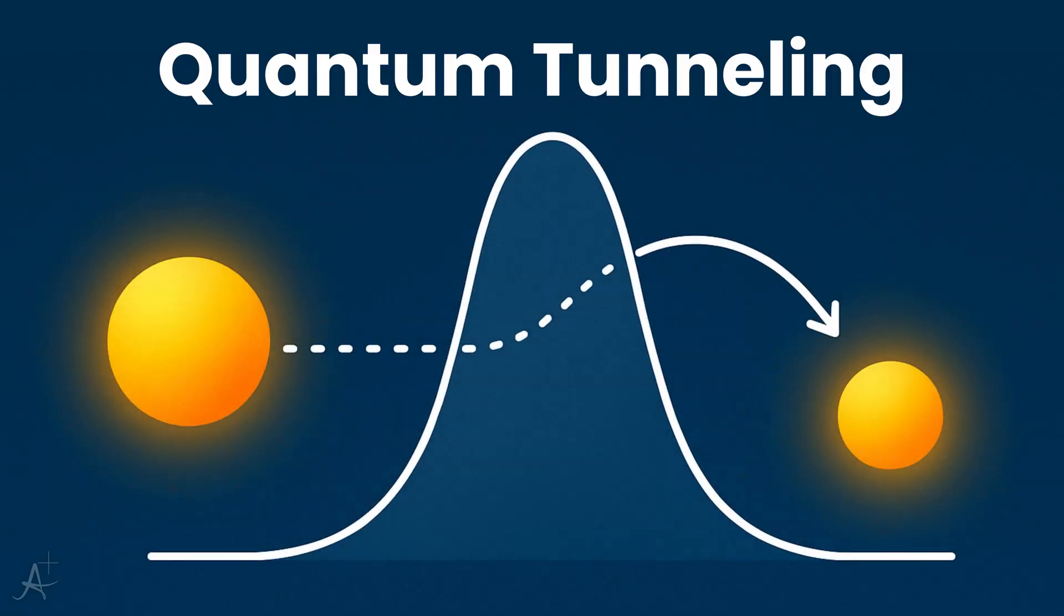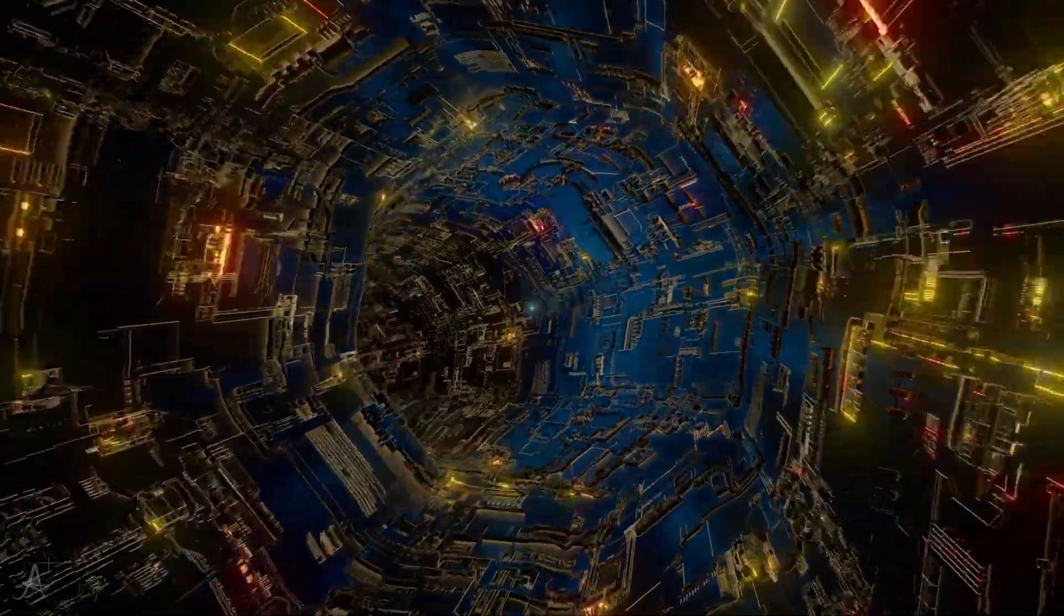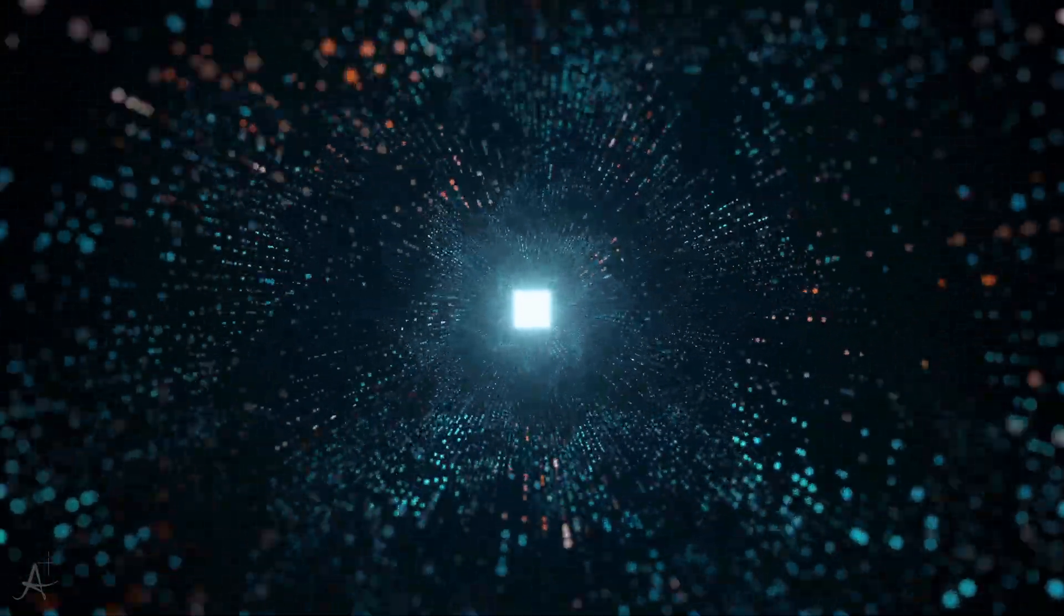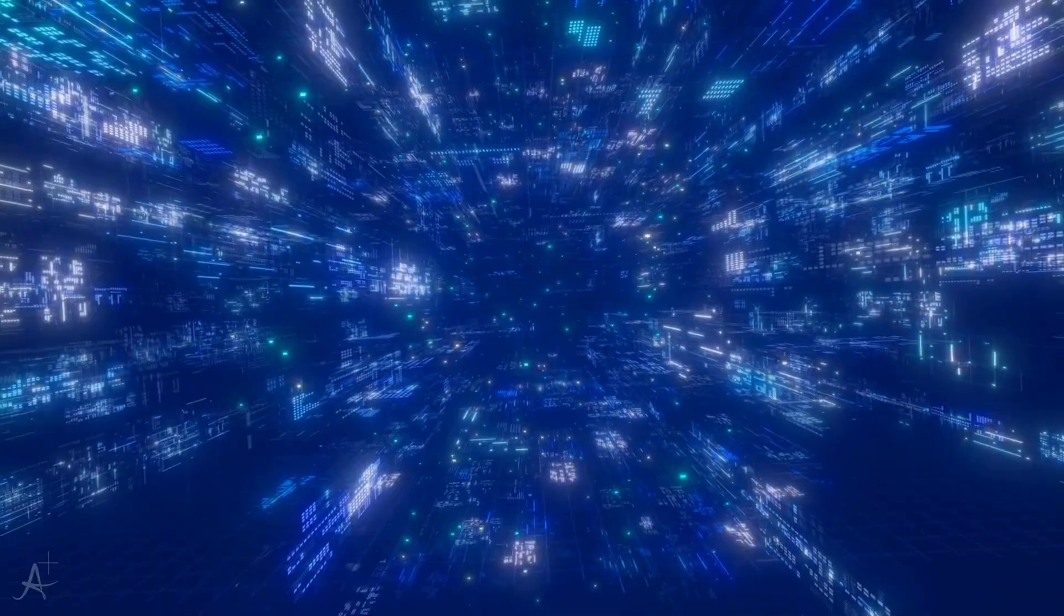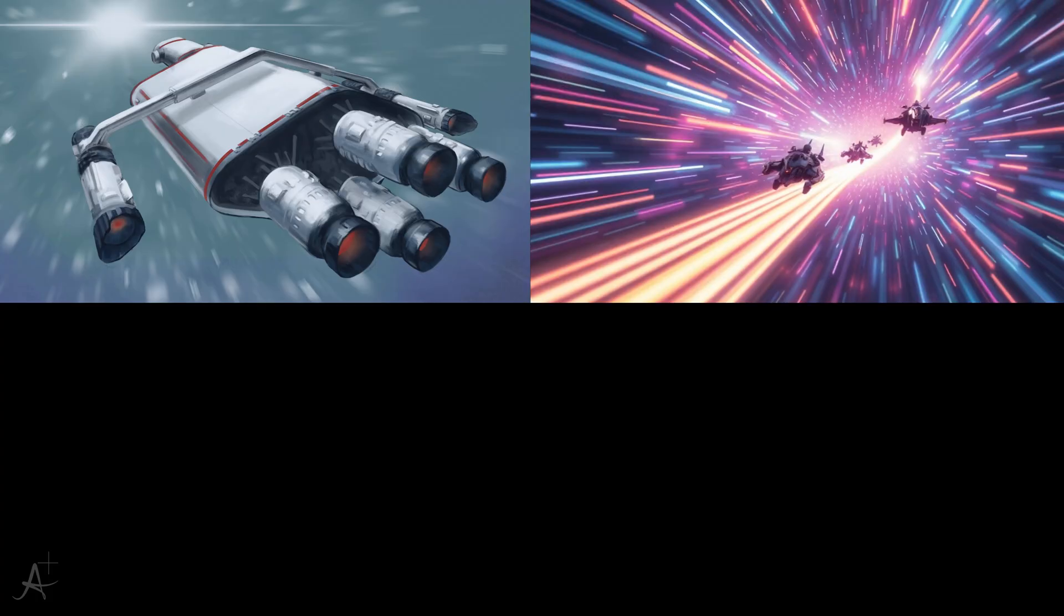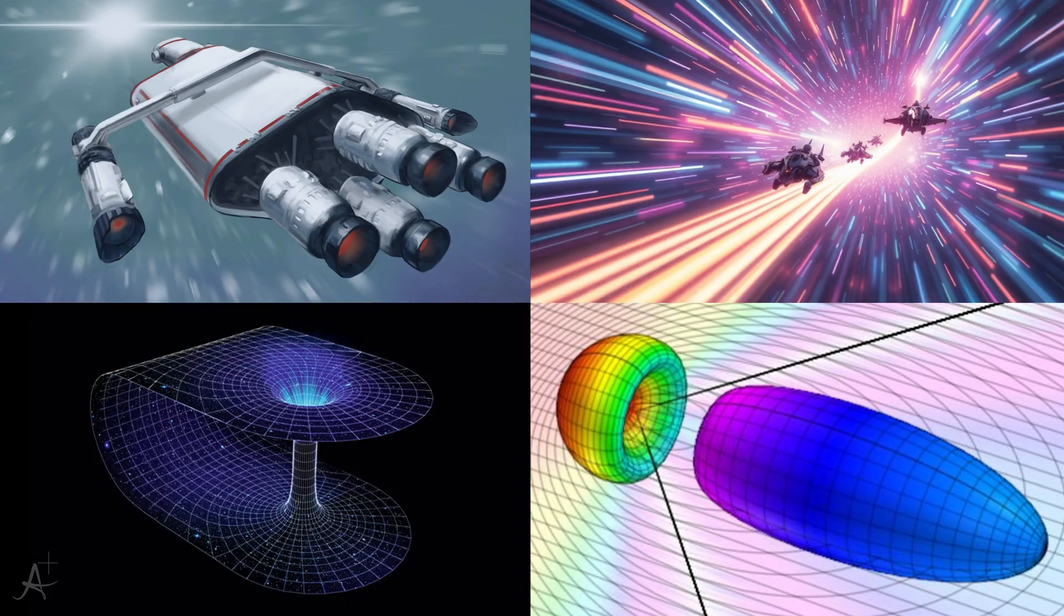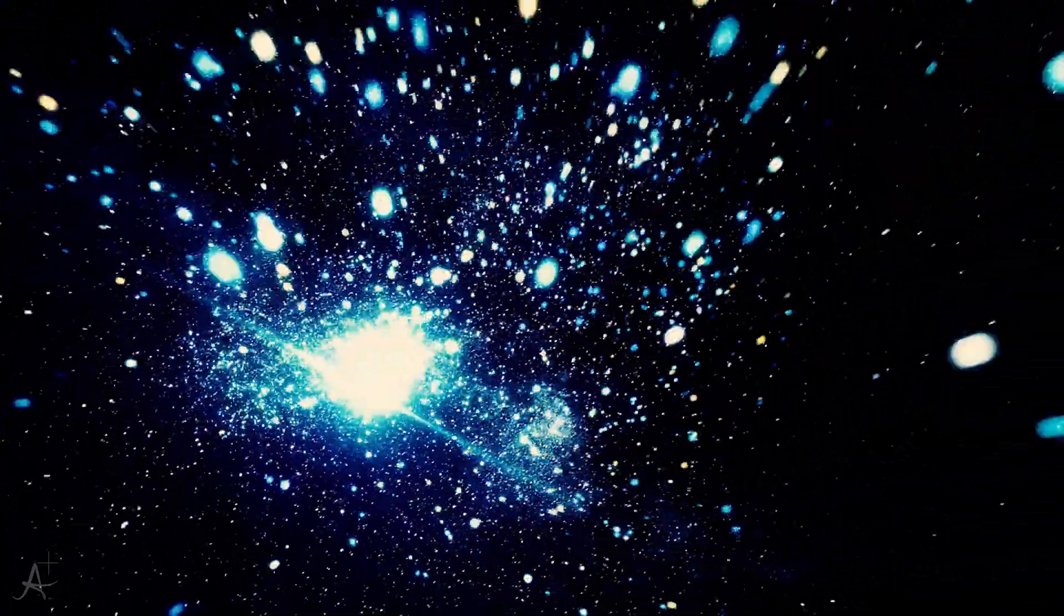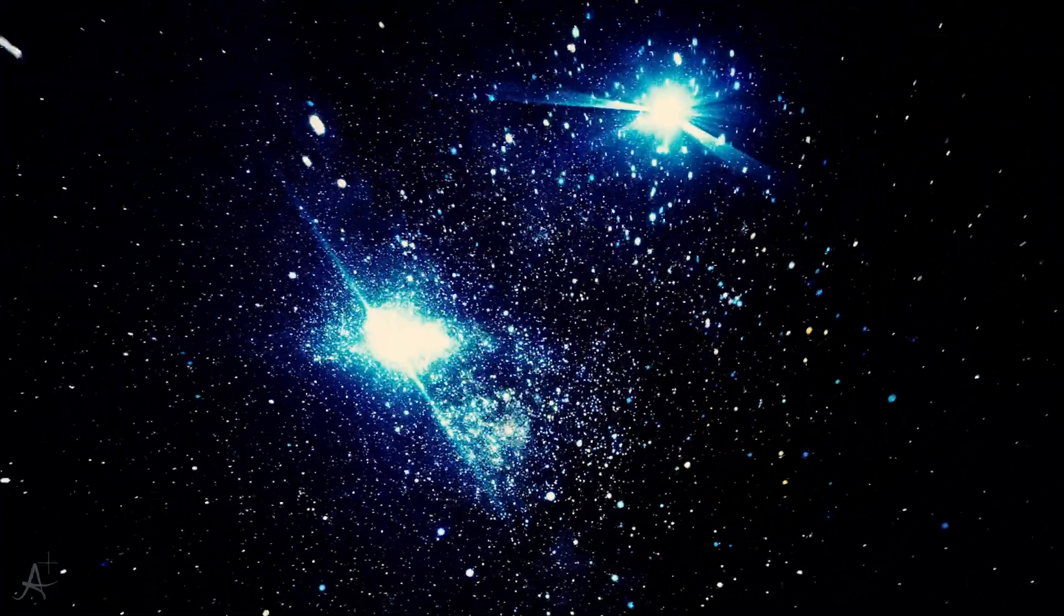There are also phenomena like quantum tunneling, where particles seem to jump through barriers faster than light would take to cross them. But again, the effect doesn't allow for transmitting information or energy superluminally. It's more like a statistical trick of the quantum world, not a real shortcut for us to use. Still, the allure remains. Across decades of science fiction, we've dreamed of warp drives, hyperspace jumps, wormholes, and tachyons, hypothetical particles that always move faster than light. Tachyons would have imaginary mass and could never slow down to light speed, the same way we can never speed up to it. But if tachyons existed, they'd break causality and make the universe mathematically unstable. No evidence for them has ever been found. For now, they live only in the equations and in our imagination.